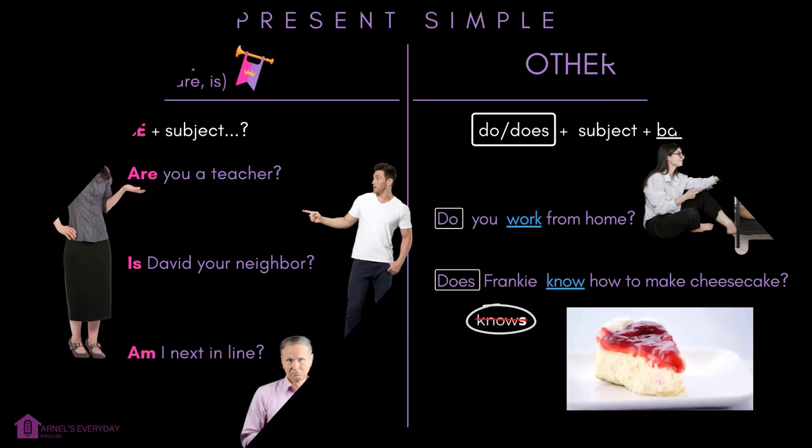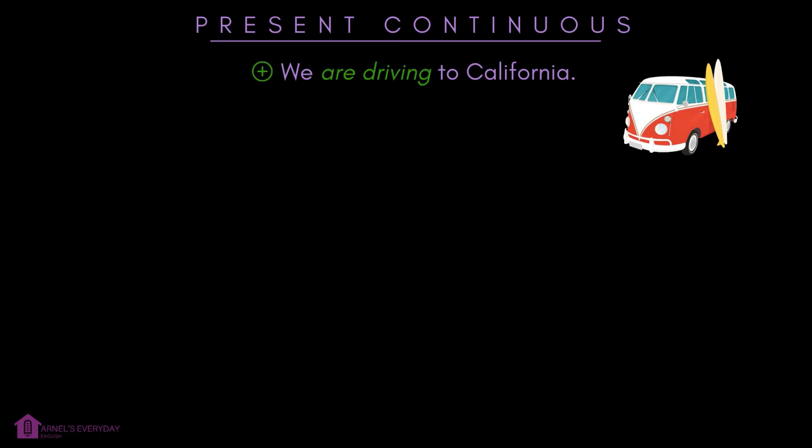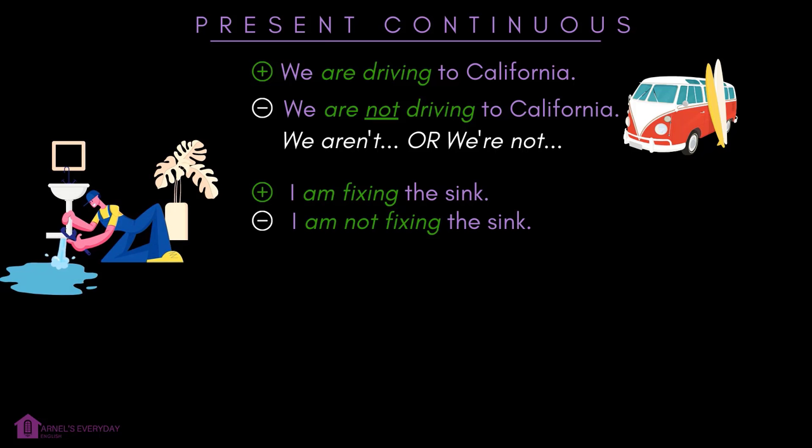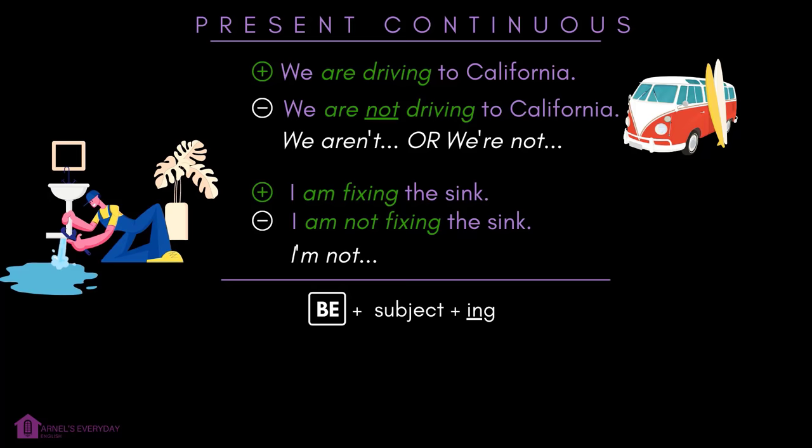Present continuous — this time it's pretty simple. For negatives, 'not' goes after be. We are not driving to California. We aren't, or we are not. I am fixing the sink. I am not fixing the sink. I'm not. Questions: be plus subject and -ing. Are we driving to California? Is Zach fixing the sink?